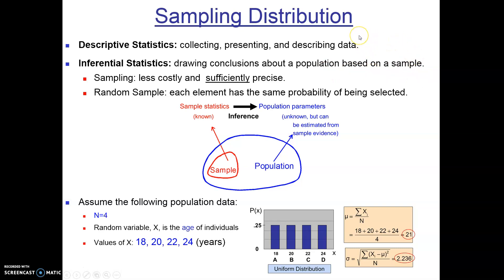So far in the class we've focused on descriptive. In your project you've been asked to collect, present, and describe a data set. With inferential we go out and collect a sample and use that to understand a population. Sampling is done because it's less costly and sufficiently precise. With sampling you're always going to have metrics that diverge from the population metrics — that's called a margin of error. But as long as the margin of error is reasonably small, sampling may be the best way to get data. A random sample is where each element has the same probability of being selected, so randomness is very important in inferential statistics.